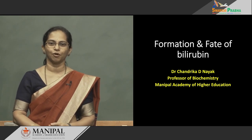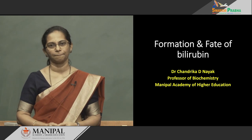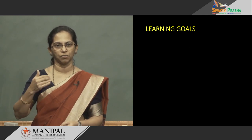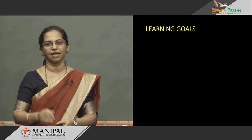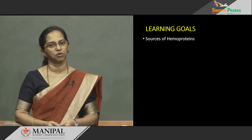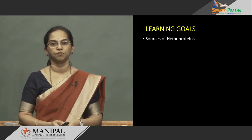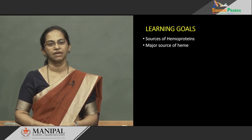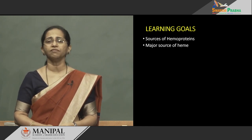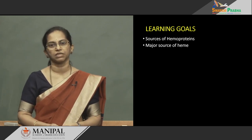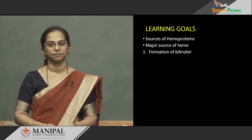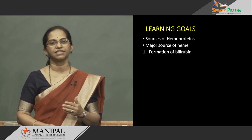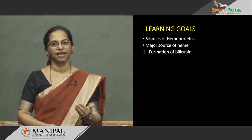Today's topic shall be formation and fate of bilirubin. Let us define the learning goals. If we have to study how bilirubin is formed and how it is metabolized, we will go stepwise. First and foremost, we need to know the source of hemoproteins — where does heme come from, where are these heme proteins, and what will happen to them on degradation. Next, we need to know which is the major source.